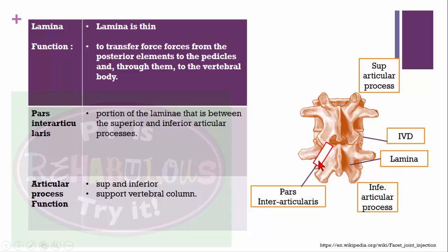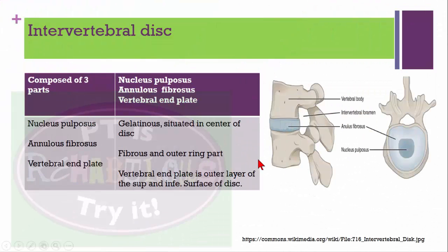The pars interarticularis is the portion of the lamina that is between the superior and inferior articular process. The main function of the articular process — both superior and inferior — is to transmit force.